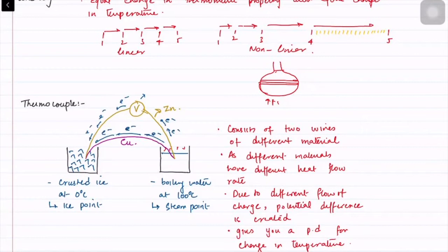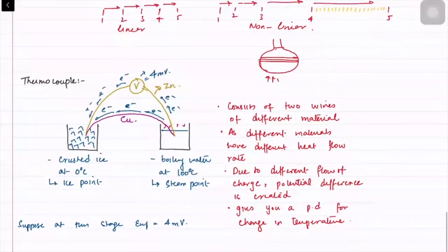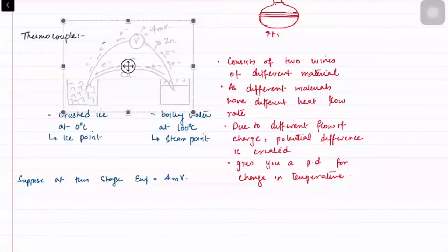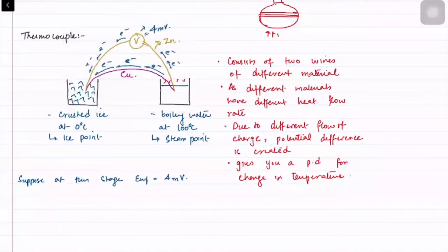Suppose at this stage the EMF or potential difference was 4 millivolts. And we want to find the temperature of another liquid which is of unknown temperature.